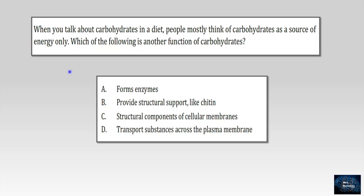Another question. When you talk about carbohydrates in a diet, people mostly think of carbohydrates as a source of energy only. Which of the following is another function of carbohydrates? First choice. Forms enzymes. That's wrong. Because enzymes are proteins. B. Provide structural support like chitin. That's right. Chitin is a polysaccharide. We can find it in shells of arthropods like crabs, shrimps, and some insects. C. Structural components of cellular membrane. Maybe it's a part of, but still it's made up of phospholipids and proteins. D. Transport substances across the plasma membrane. Actually who is responsible for that? Protein carriers and channels. So the best choice here is B. Chitin.